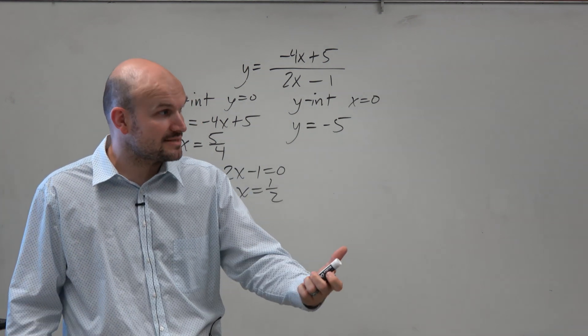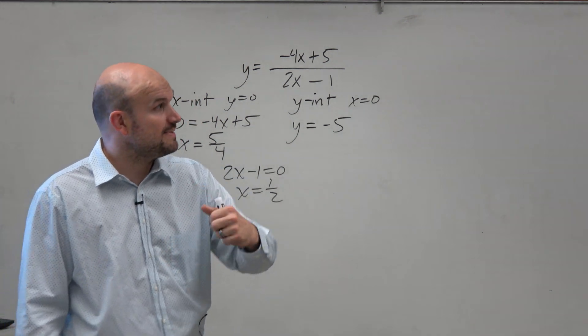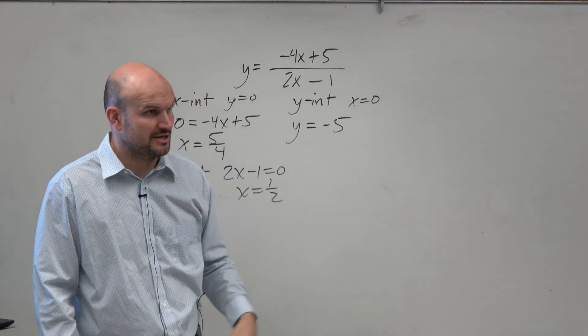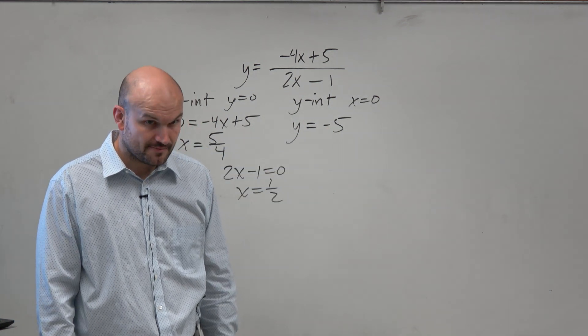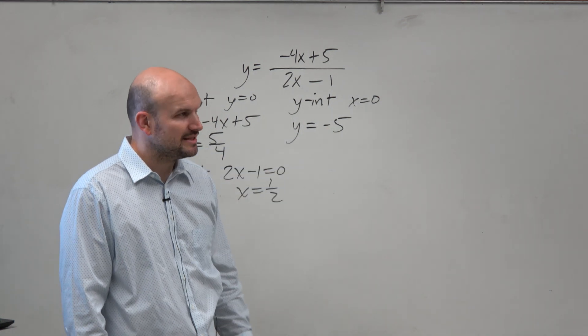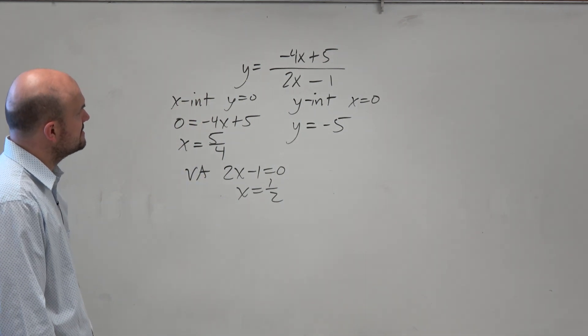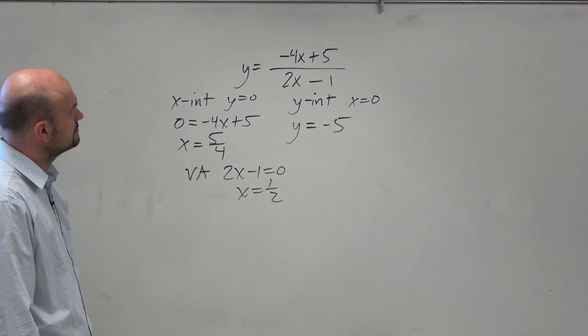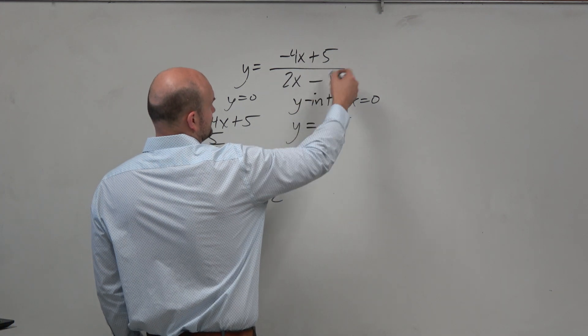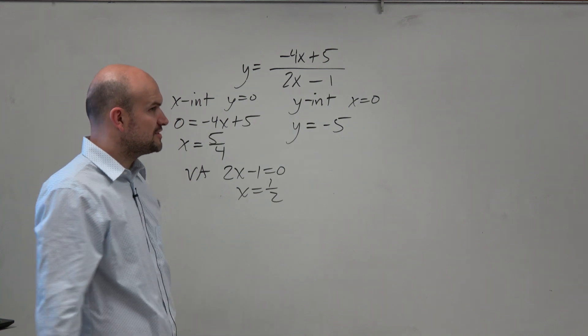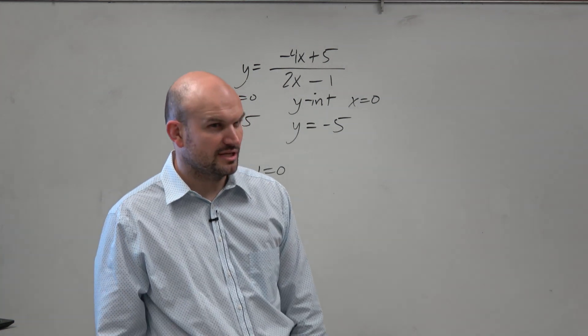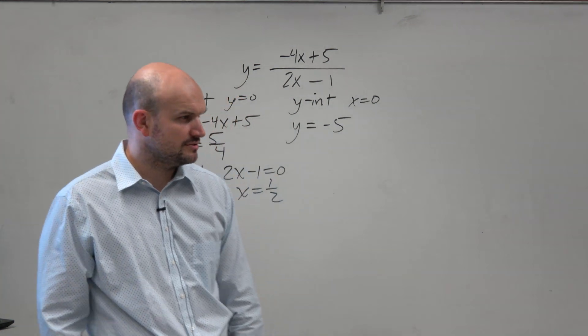The only way that we learned how to do horizontal asymptotes so far is by understanding the parent graph and transformations. Right? I did make this one. So therefore, what I want you guys to look at in this case is, well, all this is is a fraction. And a fraction represents what operation? Division.